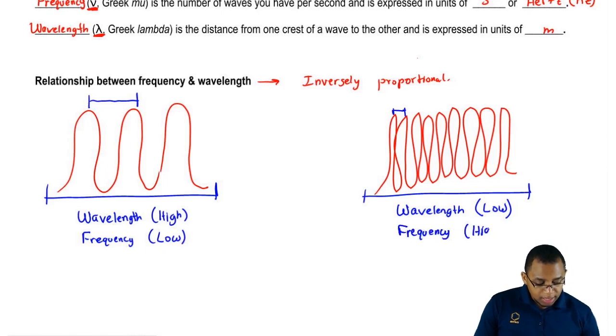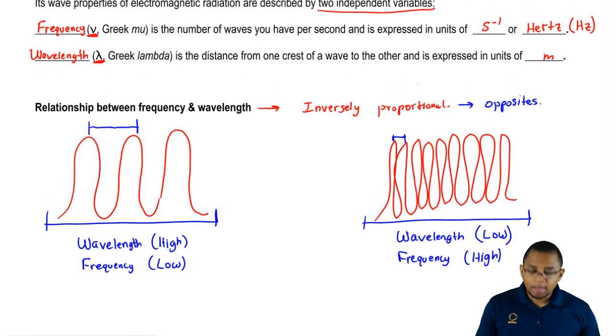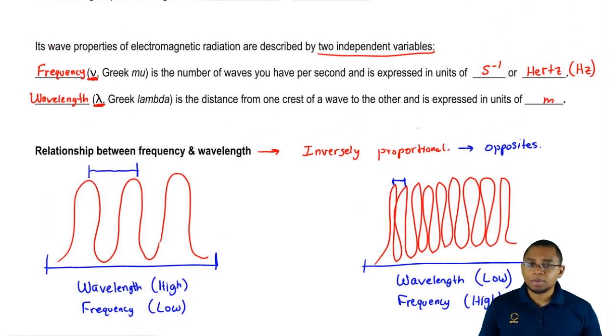So visually, this shows that frequency and wavelength are inversely proportional, meaning they're opposites of one another. We talked about this with the relationship between factors like pressure and volume - they're inversely proportional to each other. Same way: wavelength and frequency are inversely proportional.